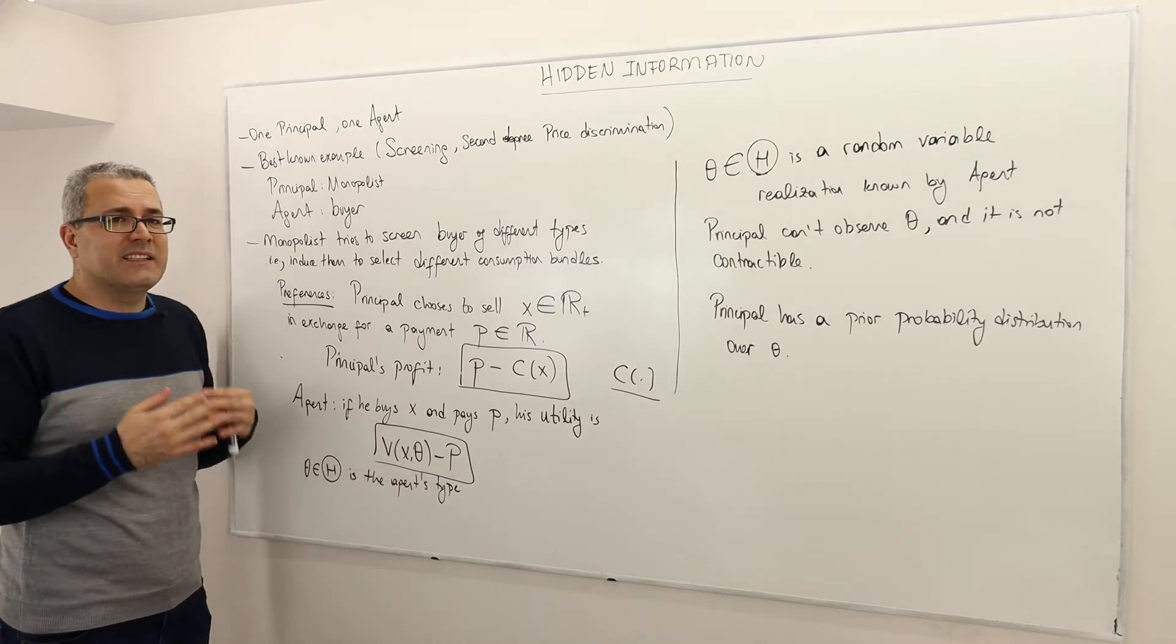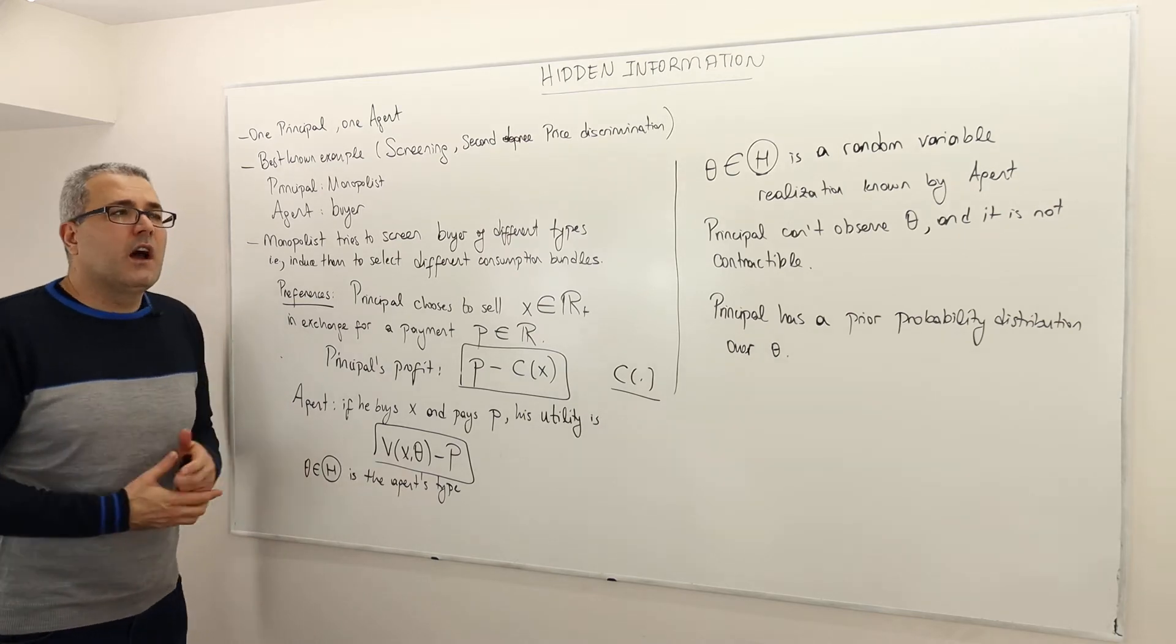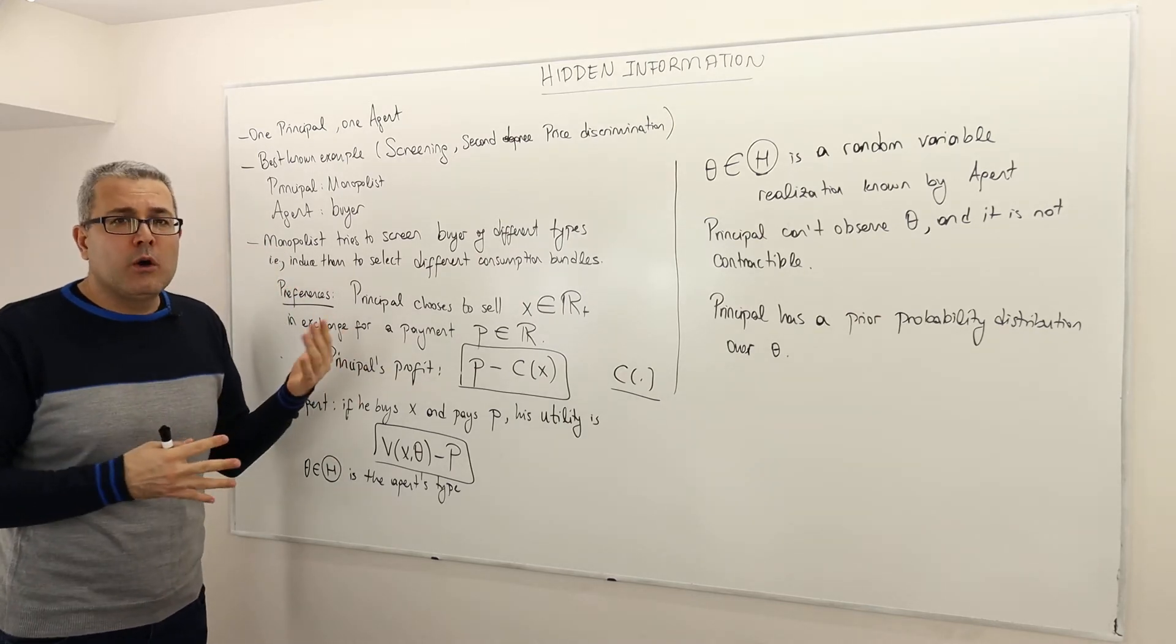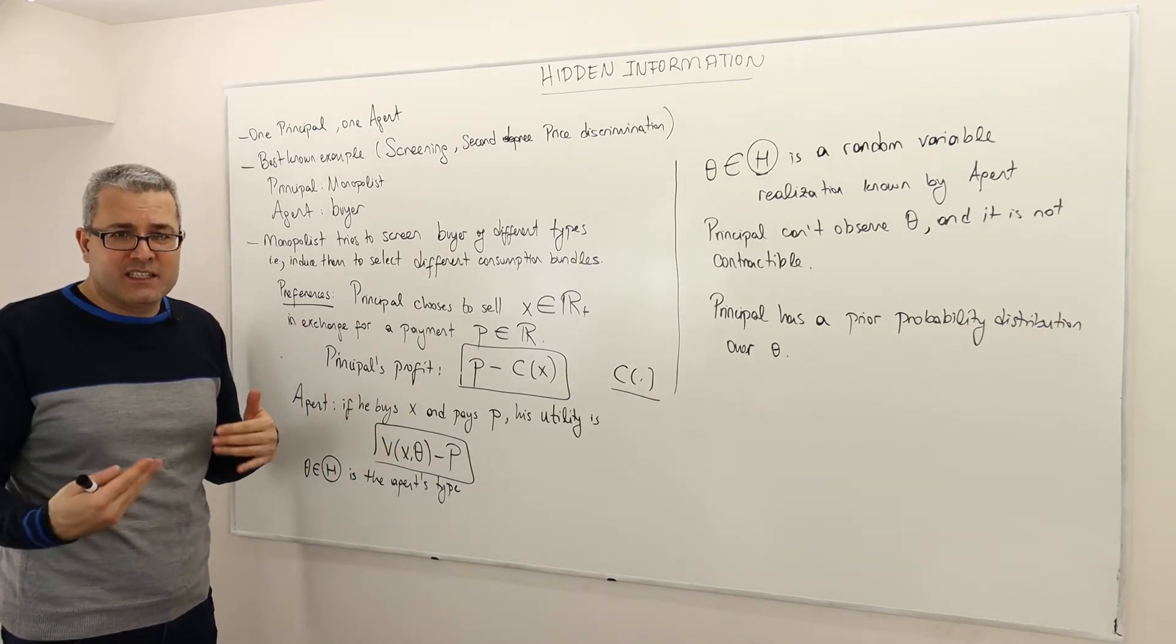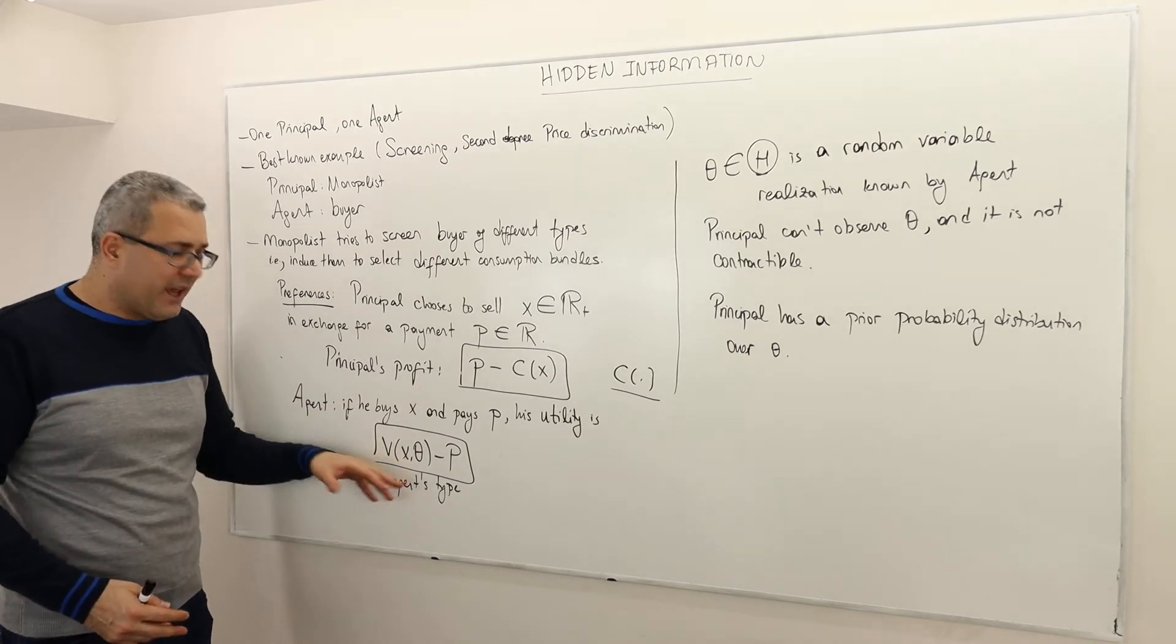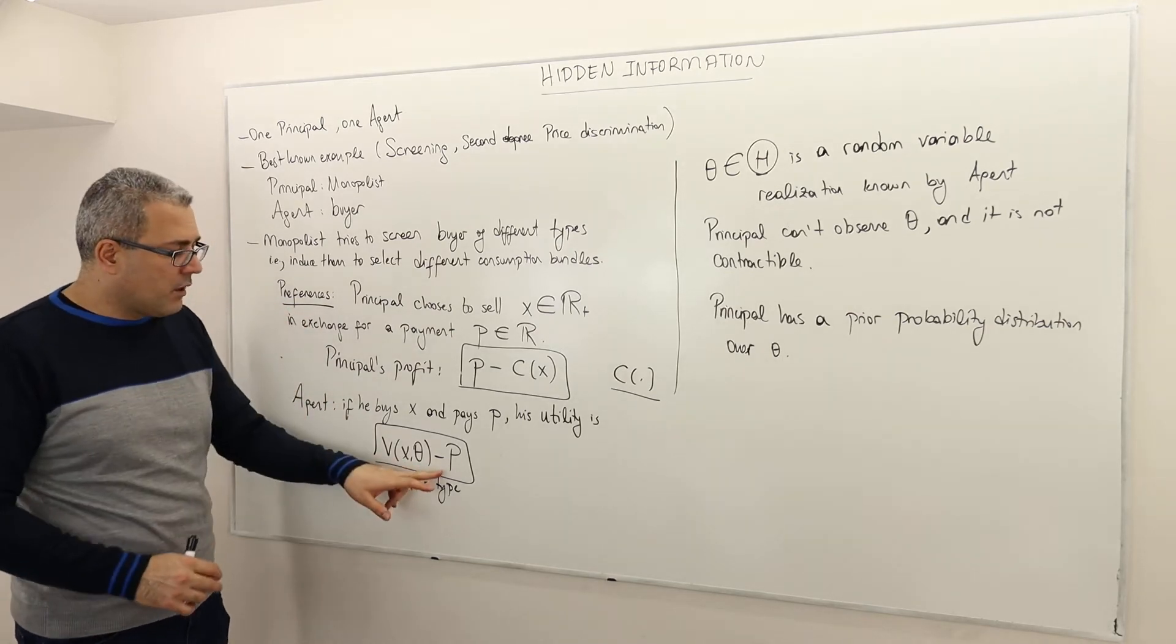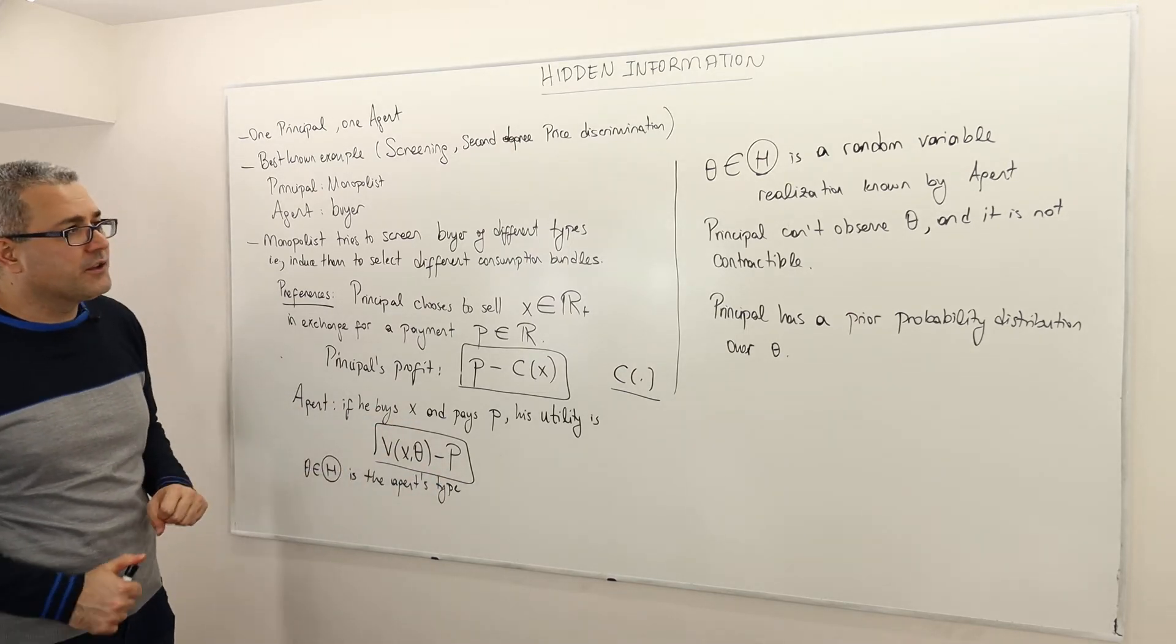And the theta, theta is the type of the agent. So you can think of this product, whatever this product is, maybe your willingness to pay is low, or maybe your willingness to pay is high. So this theta basically tells us what your willingness to pay is. Your willingness to pay depends on not only the amount of X you're buying, but also your type. So minus, obviously, the price you pay. This is going to be the payoff of the agent.